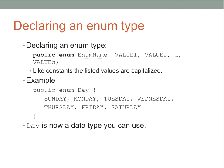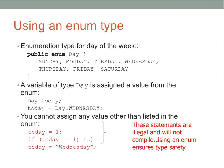Here's our example: public enum Day, with curly braces containing the days of the week — Sunday, Monday, Tuesday, Wednesday, Thursday, Friday, Saturday. Now Day is a data type we can use in our code, and we get a lot of advantages from that.